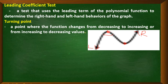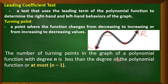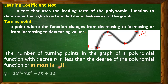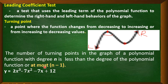In this example we have two turning points. The number of turning points in the graph of a polynomial function with degree n is at most n minus 1. It can be exactly n minus 1 if there is no multiple root, or less than n minus 1 if there are multiple roots. Always remember: the number of turning points is at most n minus 1.